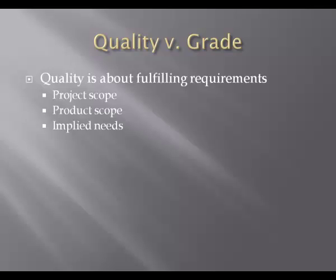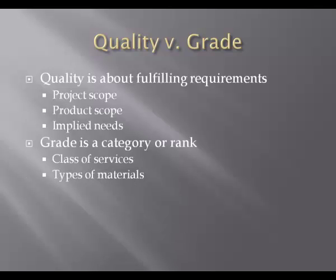Some of those things, like goodness and happiness, you can't really quantify, but they're implied. Now grade is really about a category or a ranking. So you have a class of services — first class versus coach — or gold, silver, and bronze customer service. Grade is also applied to types of materials, like oak versus plywood or maple wood. There are all different types of grades with services and with materials.